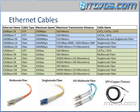Then we've got 1000BaseT. This is also UTP cable. We're going to get 1000Mbps, or a gigabit. 100 meters is as far as it can go, and this can be Cat5e or Cat6 — notice it can't be a Cat5 cable.